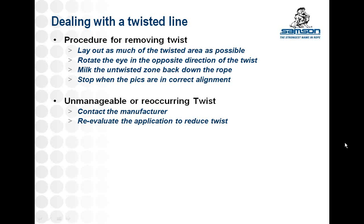Because synthetic rope has some shape memory, a line that has been twisted may be likely to twist again in the future. If a twist is found in a line, it is important to look at the operation and determine what is causing the twist in the first place — normally it's not going to occur on its own, so it's important to get to the source of the issue. If a line is repeatedly becoming twisted in a certain application, it may be necessary to contact the manufacturer to evaluate the circumstances. In some cases, a severely twisted rope may need to be replaced or hardware changes may need to occur.